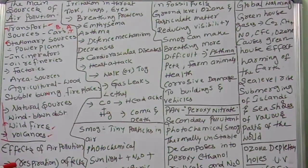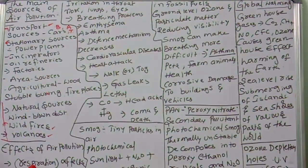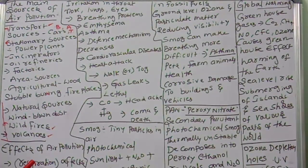Next, the effects of air pollution. Air pollution affects all organisms as they depend on the atmosphere for respiration. Almost all organisms depend on the atmosphere for respiration, so if the atmosphere is polluted, everyone will suffer.